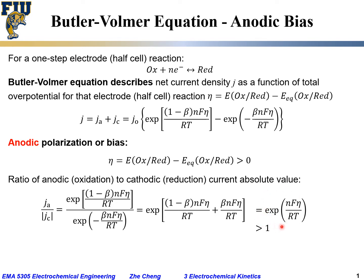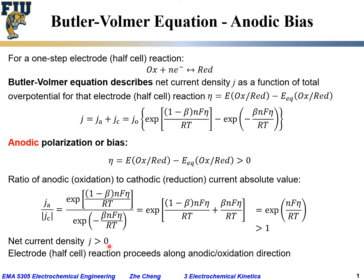For anodic polarization, η > 0, so the exponential term exp(nFη / RT) is greater than one. This means |j_a| > |j_c|. Since j_a is positive and j_c is negative, the net current density j = j_a + j_c is greater than zero.